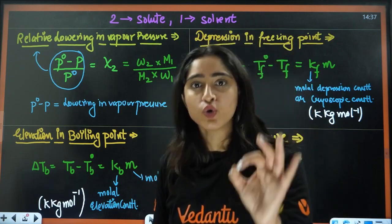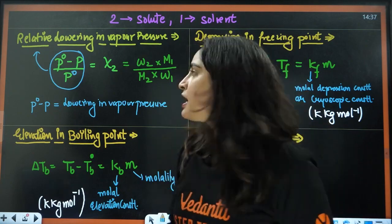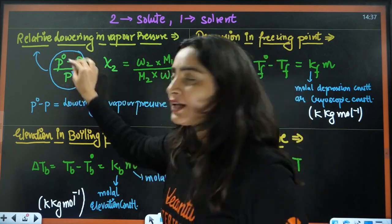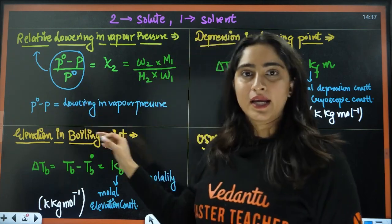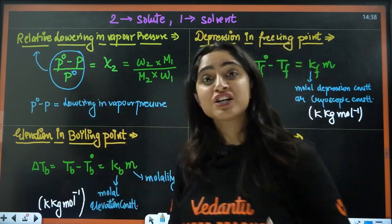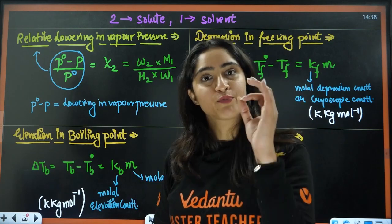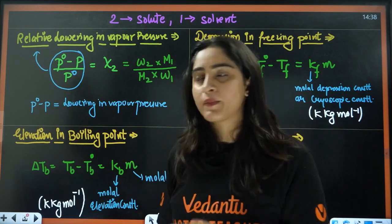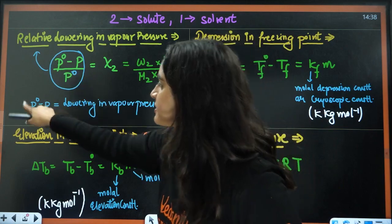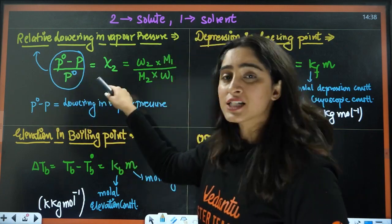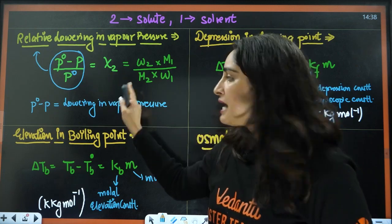If I am denoting something 2, that means I am talking about solute, and with 1, I am talking about solvent. So here, this is the relative lowering in vapor pressure, but P₀ minus P is the lowering in vapor pressure, where P is the partial pressure and P₀ is the pure vapor pressure. So this is relative lowering, and it equals the mole fraction of solute.